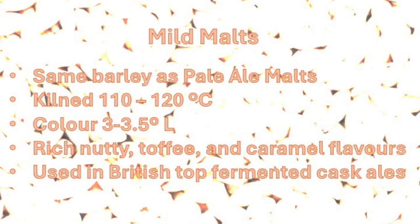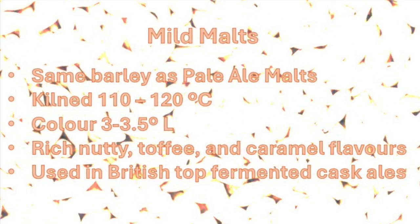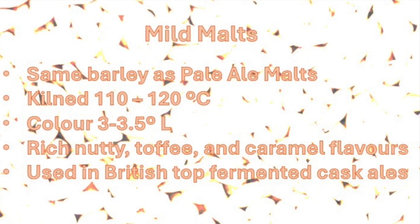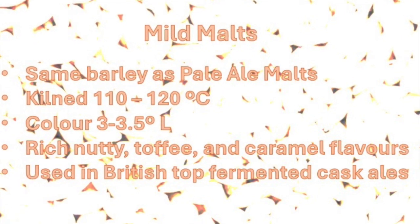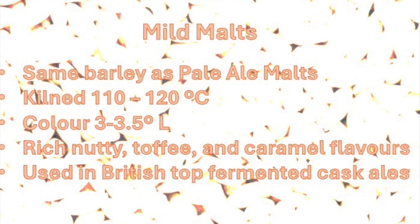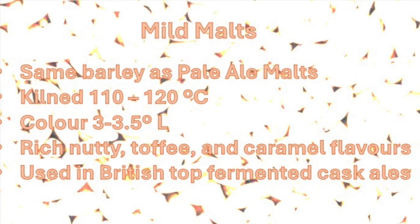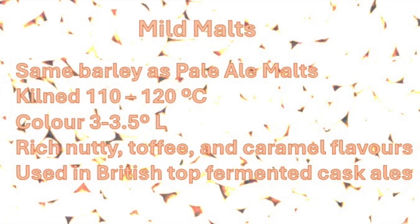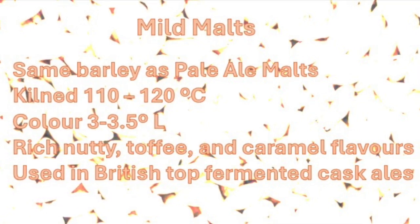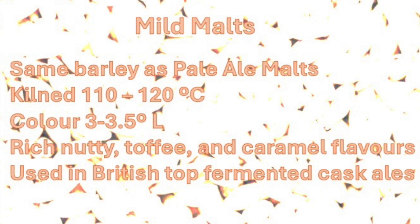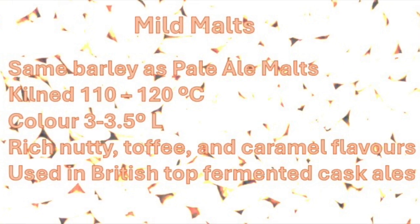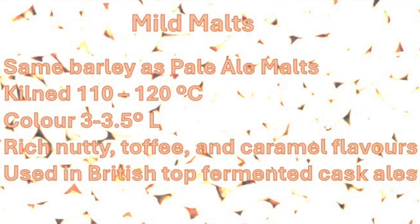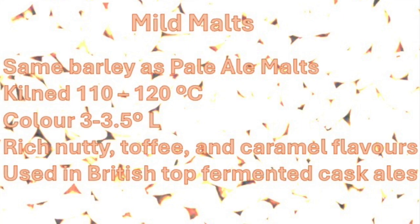Mild malts are produced from the same barley as pale ale malts, but the final kilning temperatures are in the range of 110 to 120°C, or 230 to 248°F. As a consequence, the color is up to 3 to 3.5 Lovibond, and the malt has a rich nutty, toffee, and caramel flavor. It is used for the production of British top-fermented cask ales.